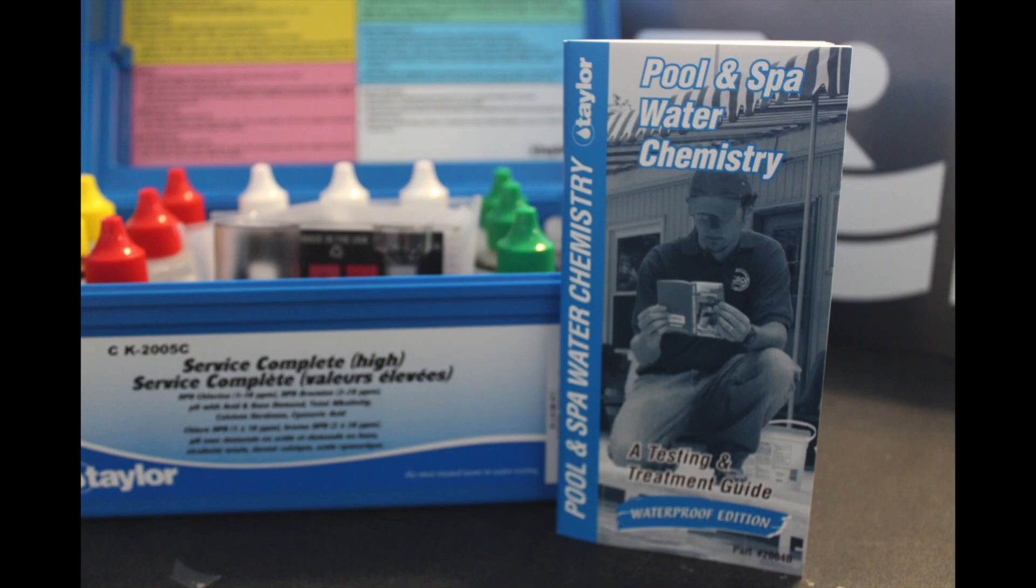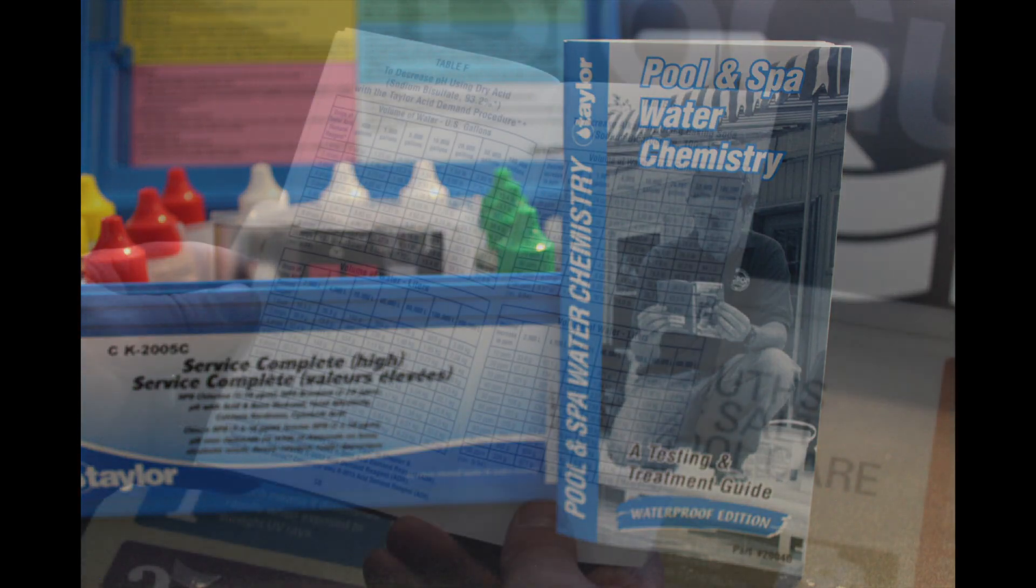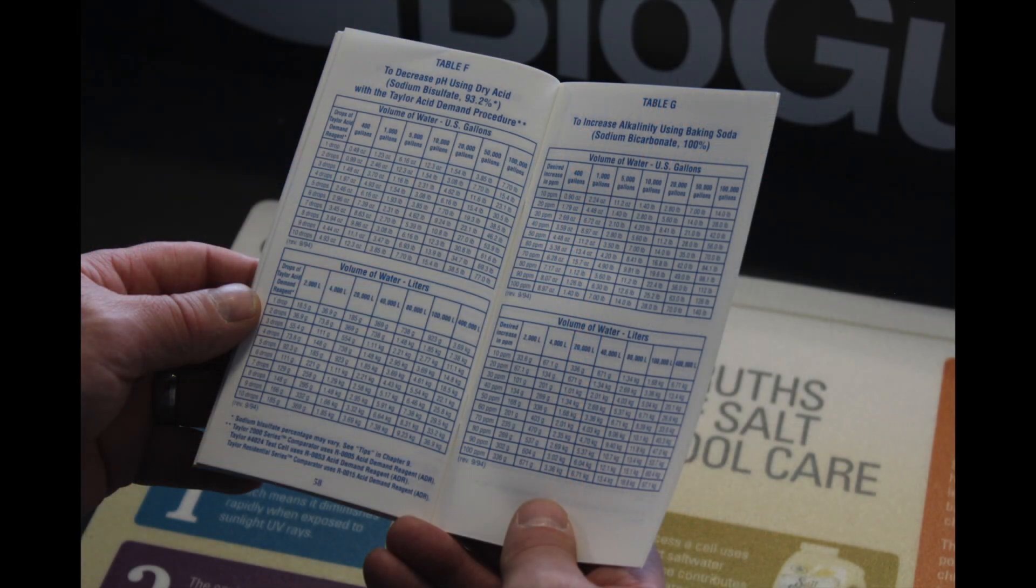To use these tests, you will need to have the Pool and Spa water chemistry guide found in the test kit. In the guide, you will find the treatment tables which will help you dose the pool to increase or decrease the pH value based on your water volume.